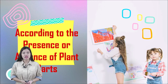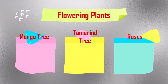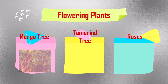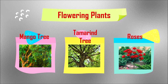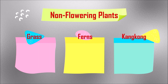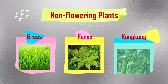Next, according to the presence or absence of plant parts, we have two types. The first is flowering plants. Examples are mango tree, tamarind tree, and roses. The other type is non-flowering plants. Examples are grass, ferns, and kangkong.